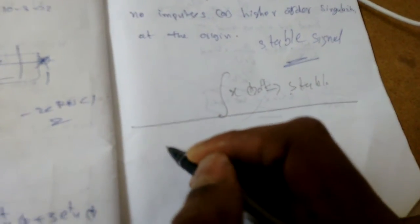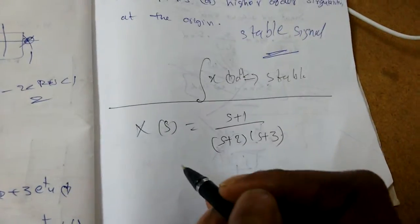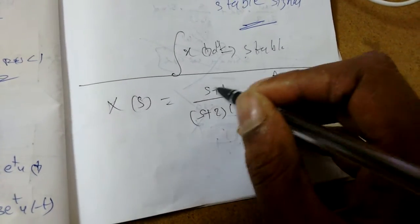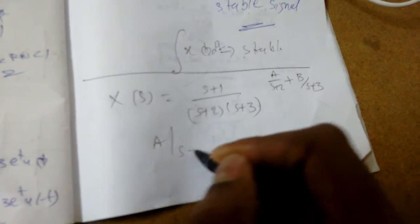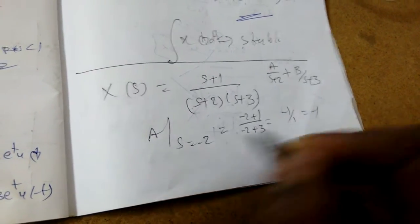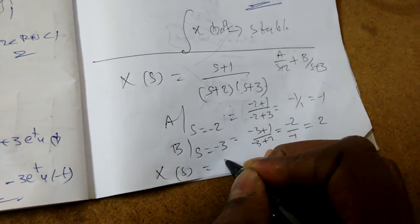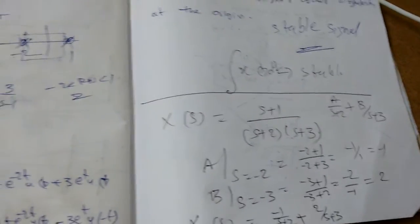Now we deal with some examples on how to find the inverse Laplace transform. Suppose X(s) = (s+1) / [(s+2)(s+3)]. We decompose this using partial fractions: X(s) = A/(s+2) + B/(s+3). To find A, put s = -2: (-2+1)/(-2+3) = -1/1 = -1, so A = -1. To find B, put s = -3: (-3+1)/(-3+2) = -2/(-1) = 2, so B = 2. Therefore X(s) = -1/(s+2) + 2/(s+3).